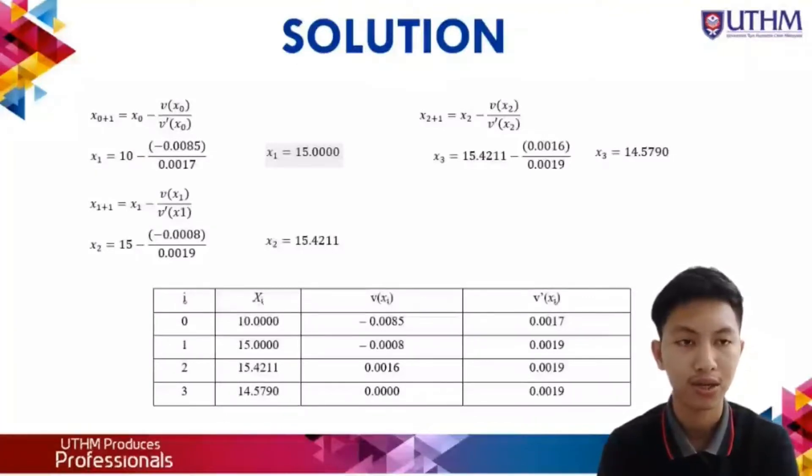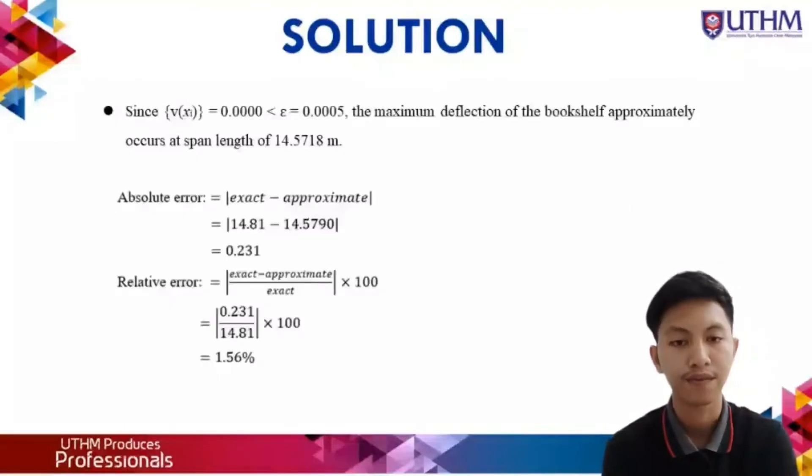We managed to get the zero interval: f(x_i) = -0.0085 and f'(x_i) = 0.0017. Using the formula, we get the first interval x_i = 15, f(x_i) = -0.008, f'(x_i) = 0.0019. Repeating the same step, we get the second interval: 15.4211, 0.0016, and 0.0019. Repeating again, we get the third interval: x_i = 14.5789, and f(x_i) = 0.00.